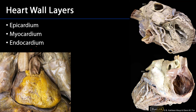On the left here, we can see the heart having most of the pericardium reflected away. What you're seeing here is the fibrous pericardium with the parietal layer of the serous pericardium reflected back. The immediate surface of the heart is a layer called the epicardium, which is the visceral layer of the serous pericardium.